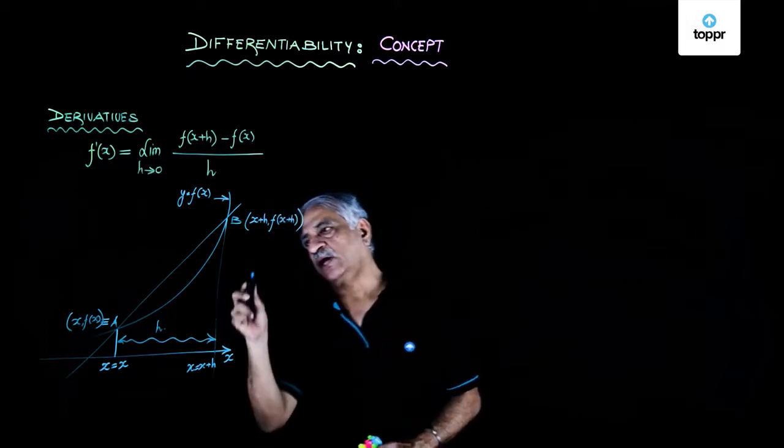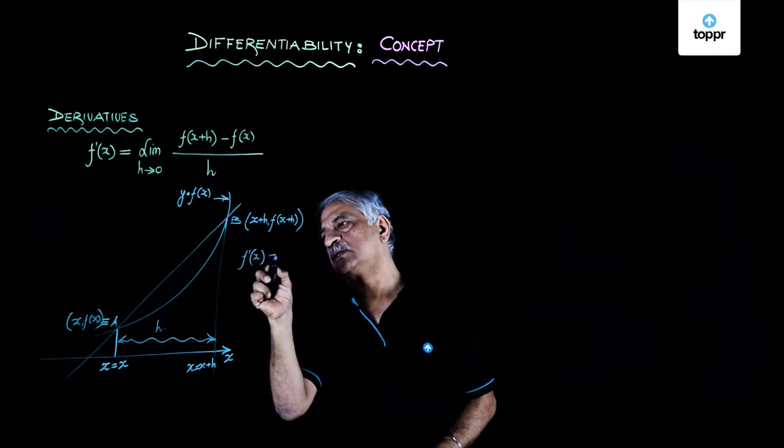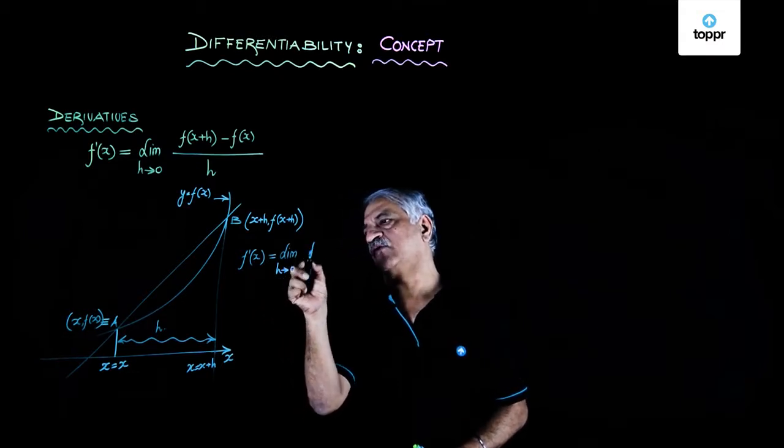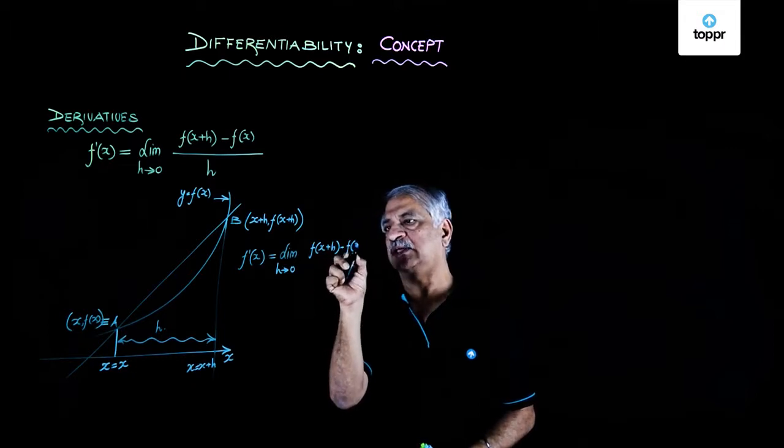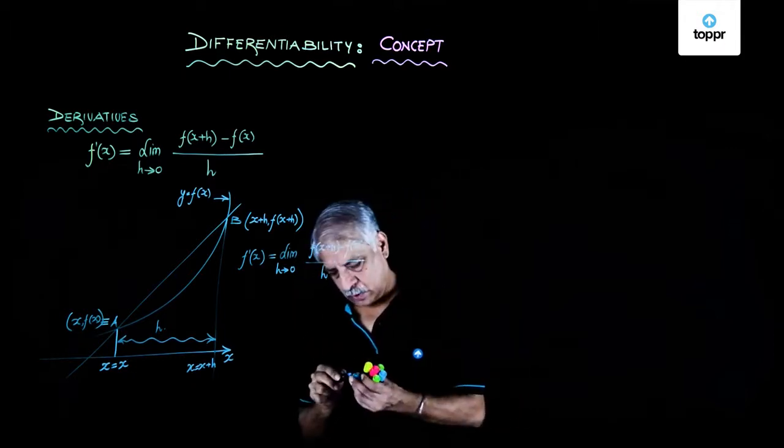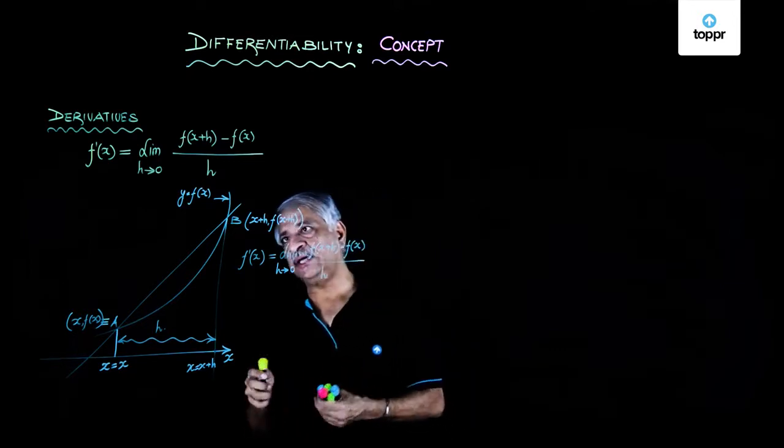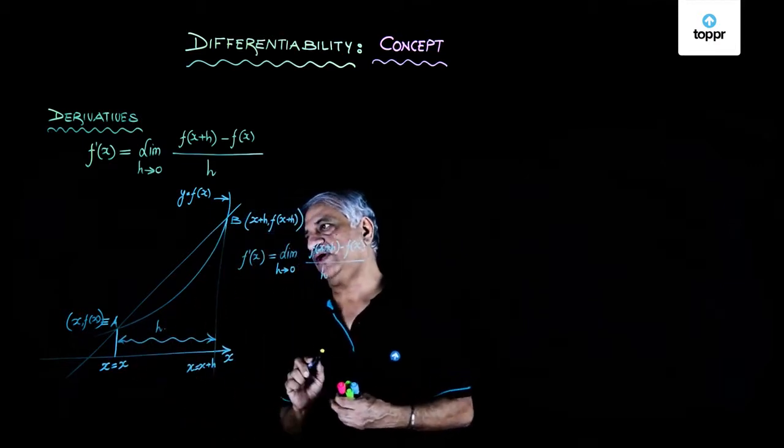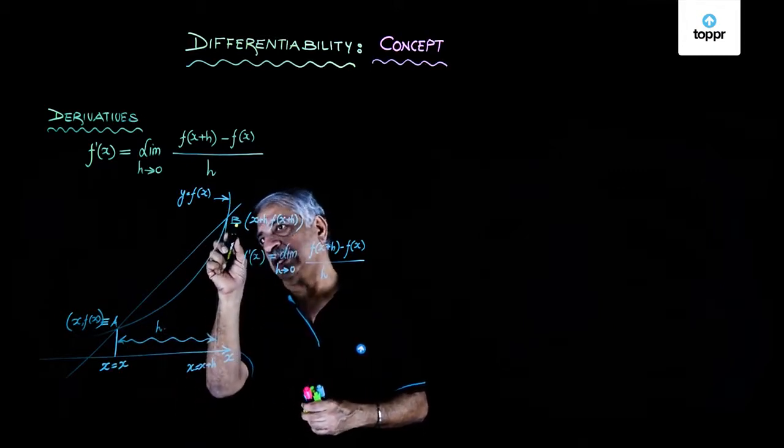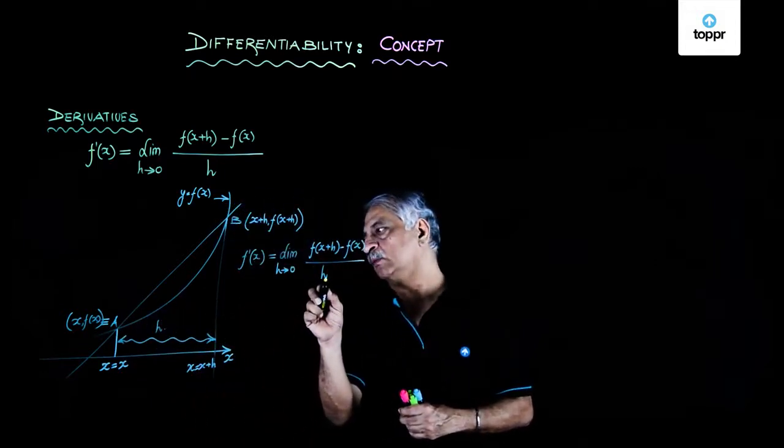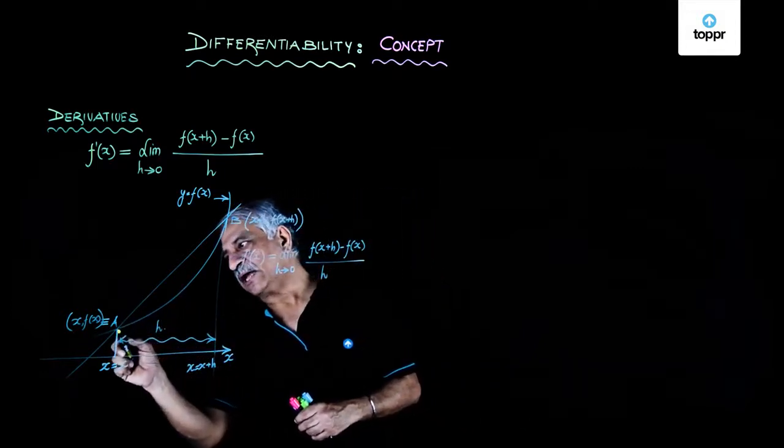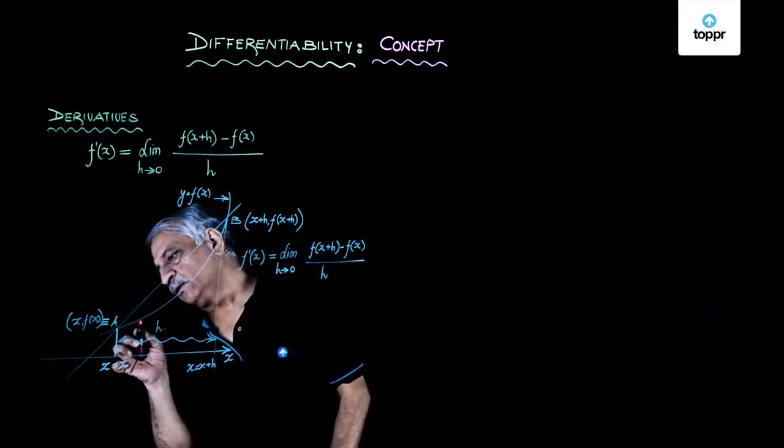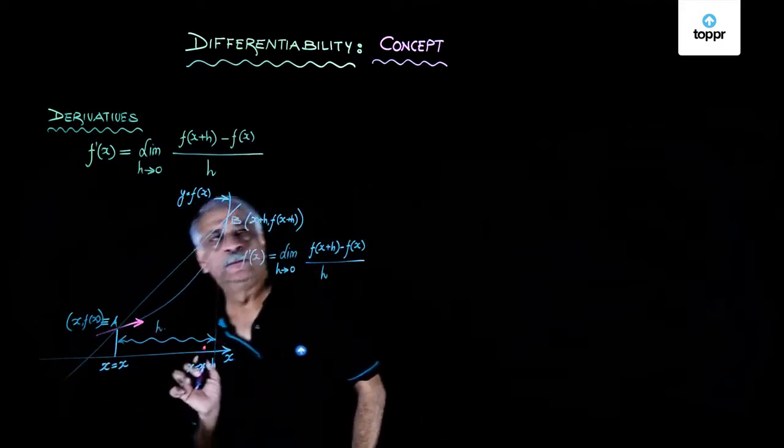Based on this, my f'(x) was limit as h tends to 0, f(x+h) - f(x) upon h. What we meant was that point B starts approaching A along the curve f(x), keeping in mind that B can never touch A because h will become 0. And we say that tangent at point A is the limiting value of the secant.